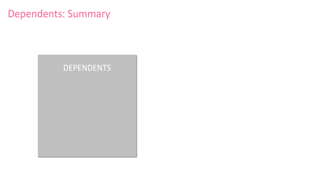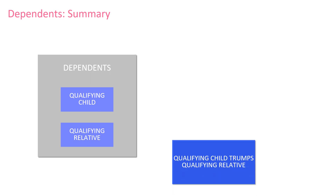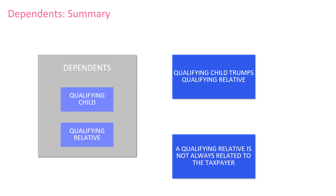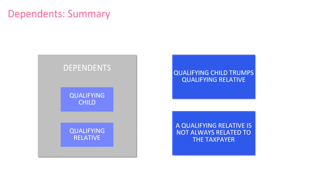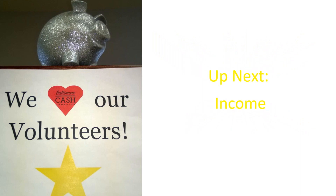To summarize this lesson: remember, there are two types of dependents — qualifying child and qualifying relative. If someone is a qualifying child, they can't be a qualifying relative. And a qualifying relative isn't always a relative. That wraps up dependency. In the next lesson, we'll cover income.